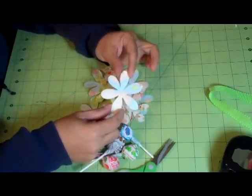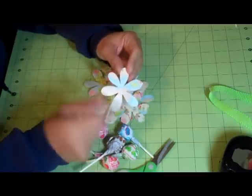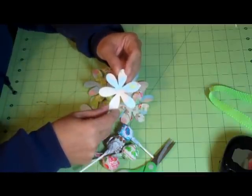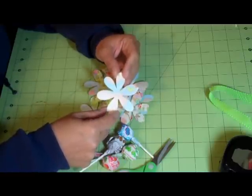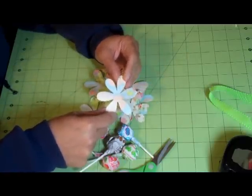This little flower was cut from the Accent Essentials cart at two and a half inches. In Kathy's video she uses a five petal flower from the George cartridge. Since I don't have the George cartridge, I decided to use this one.